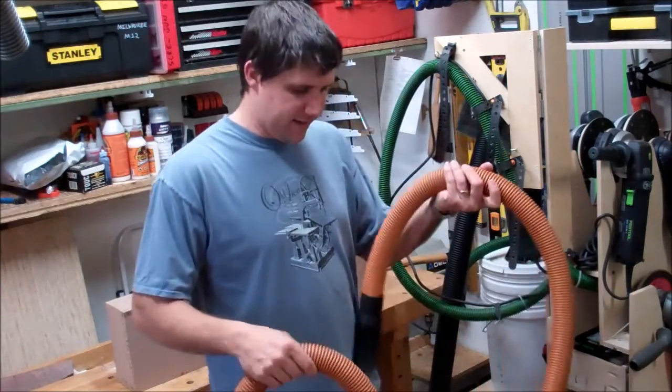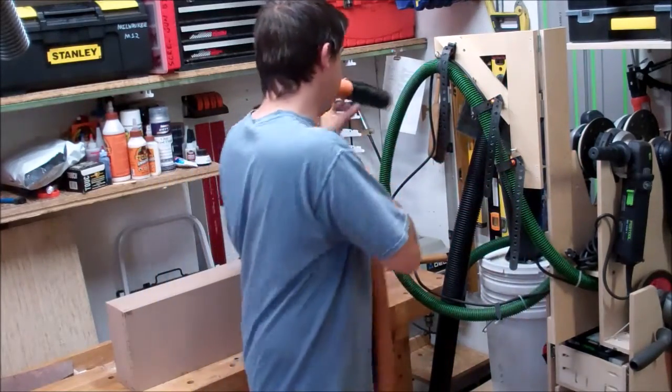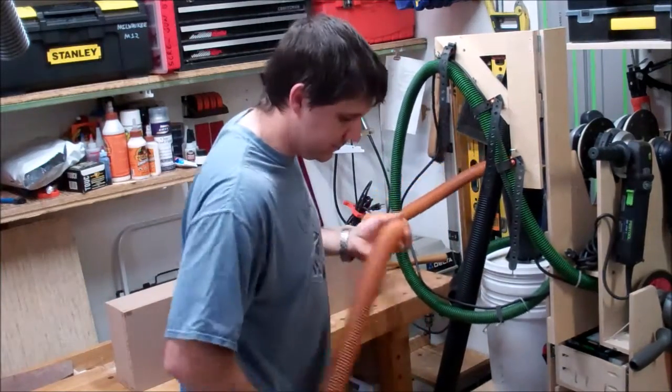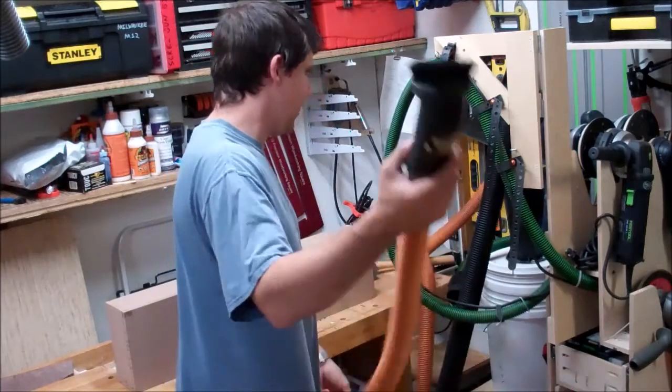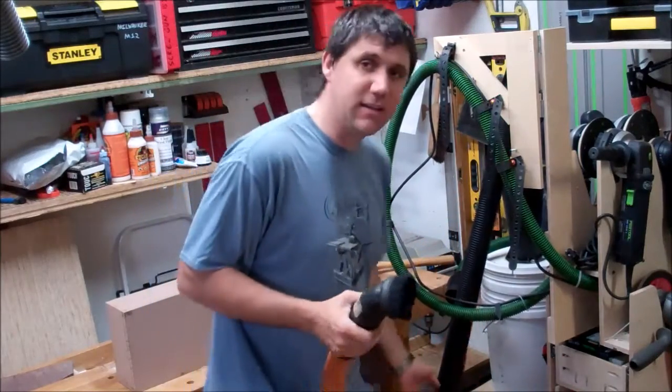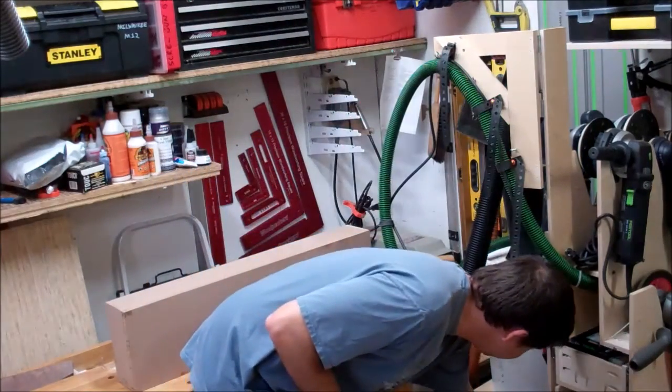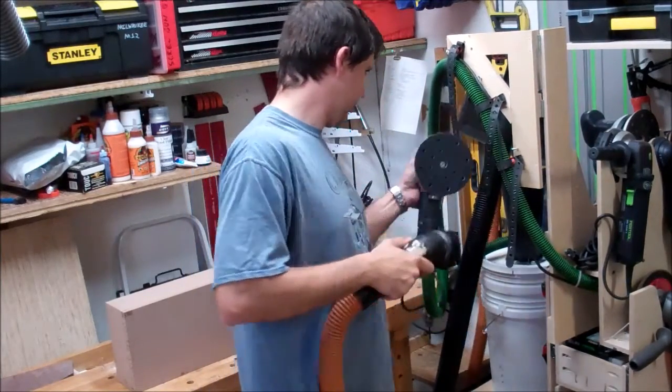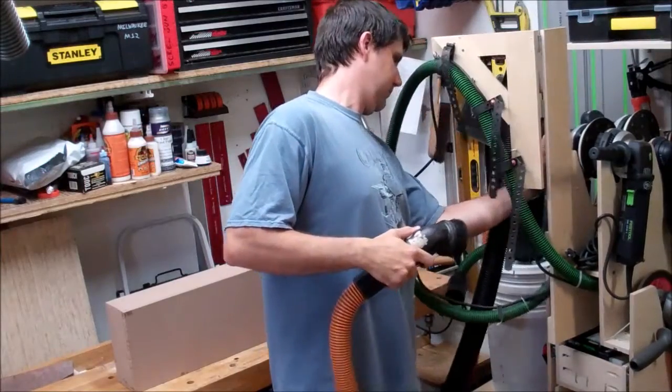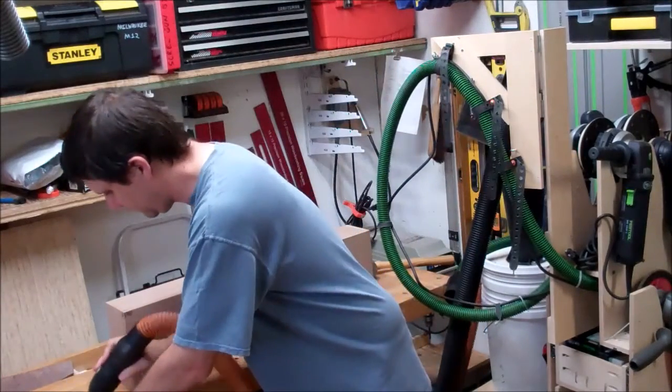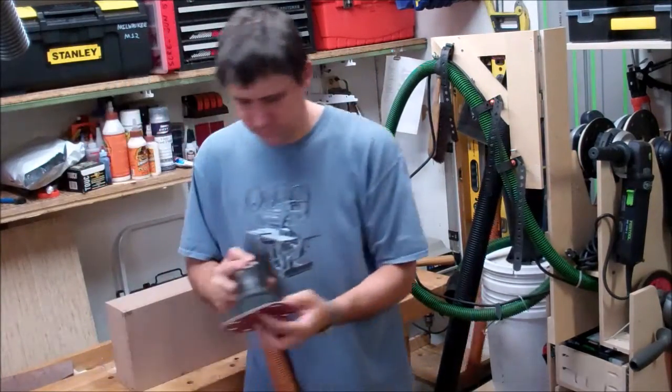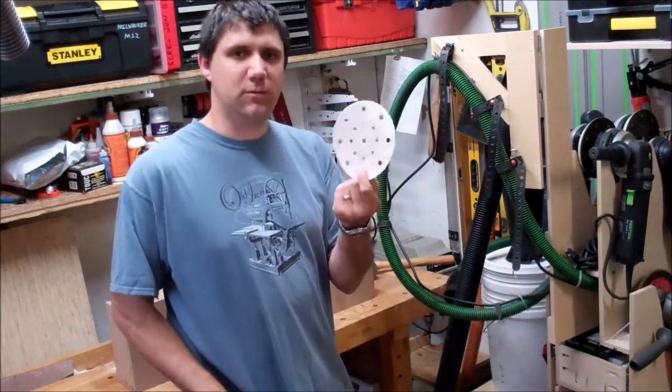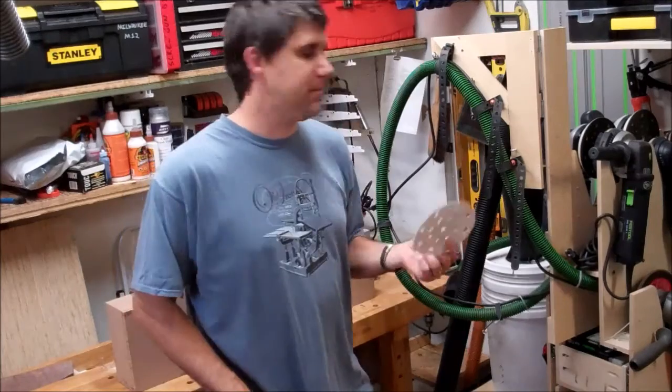Now that I've got the Festool vacuum off, I take the rigid vacuum and install it. I can turn it on and clean off my platen and paper. And there you go - nice dust-free paper and dust-free platen.